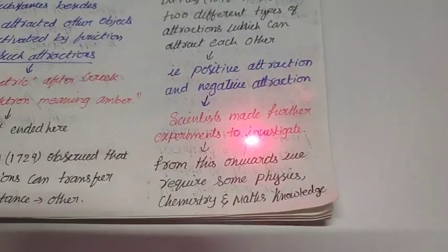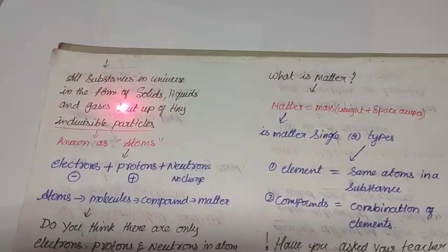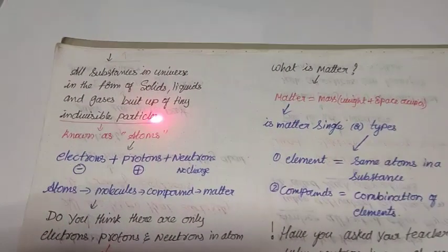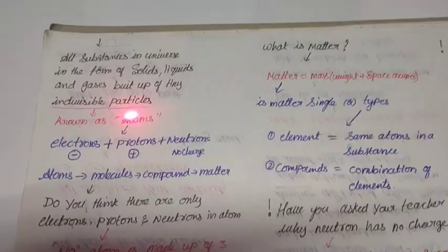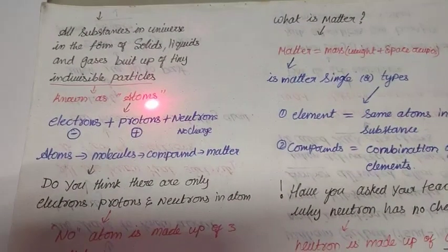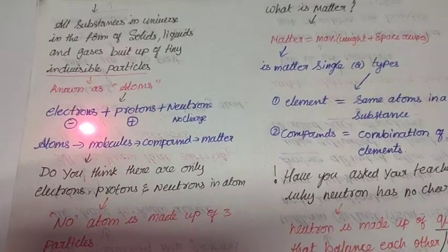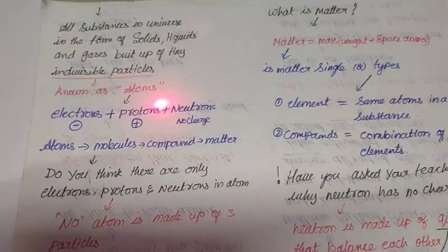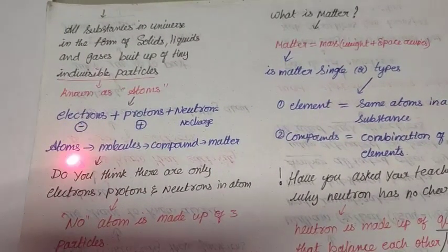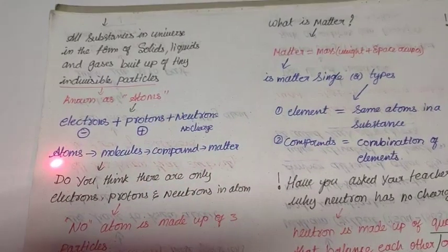The story did not end here. Scientists made further experiments to investigate. From this onwards, we require some physics, chemistry, and math knowledge to go to investigation. Let's go. All substances in the universe in the form of solid, liquid, and gaseous are made of tiny indivisible particles. Indivisible means we cannot divide further. Such particles are known as atoms. Atom consists of electrons, protons, and neutrons.